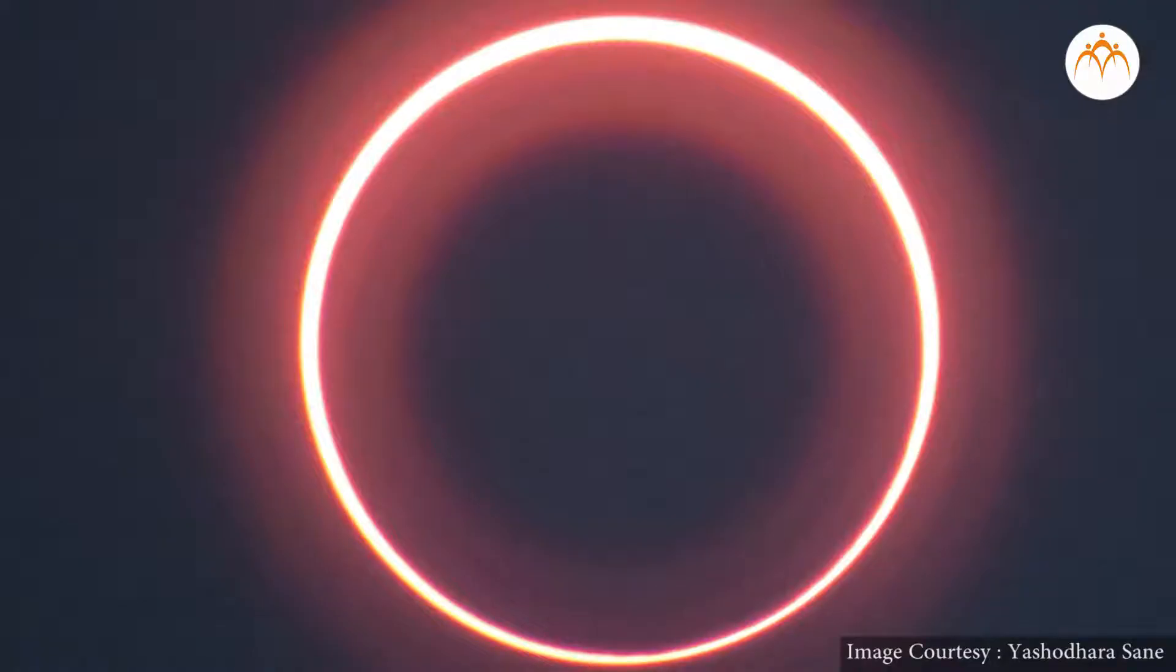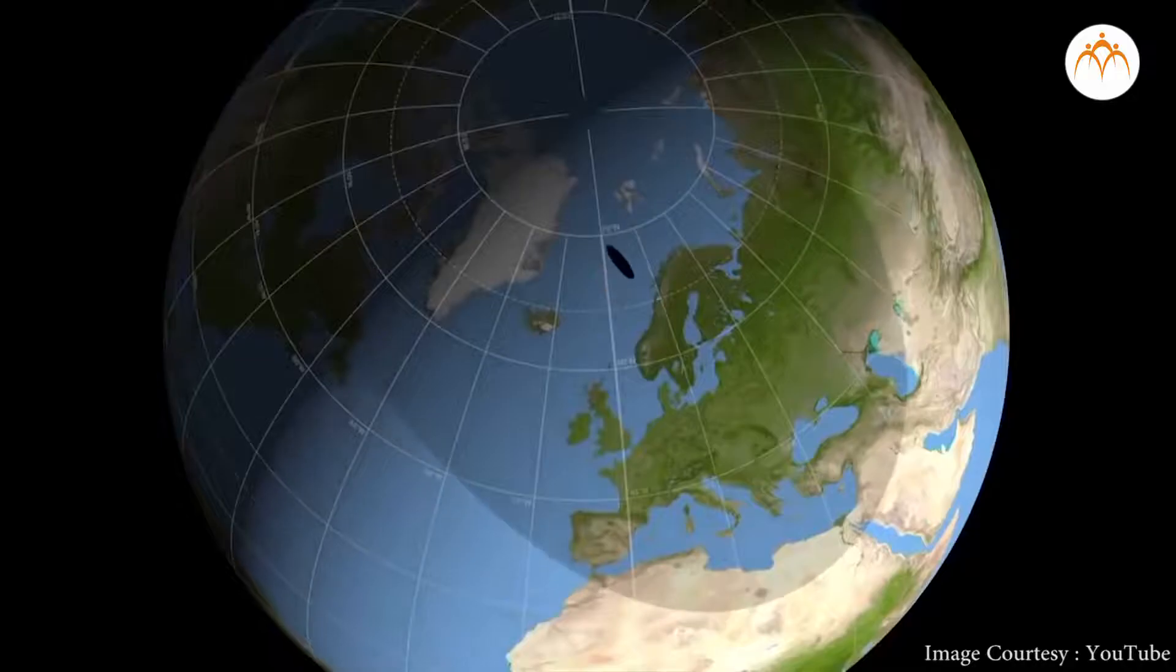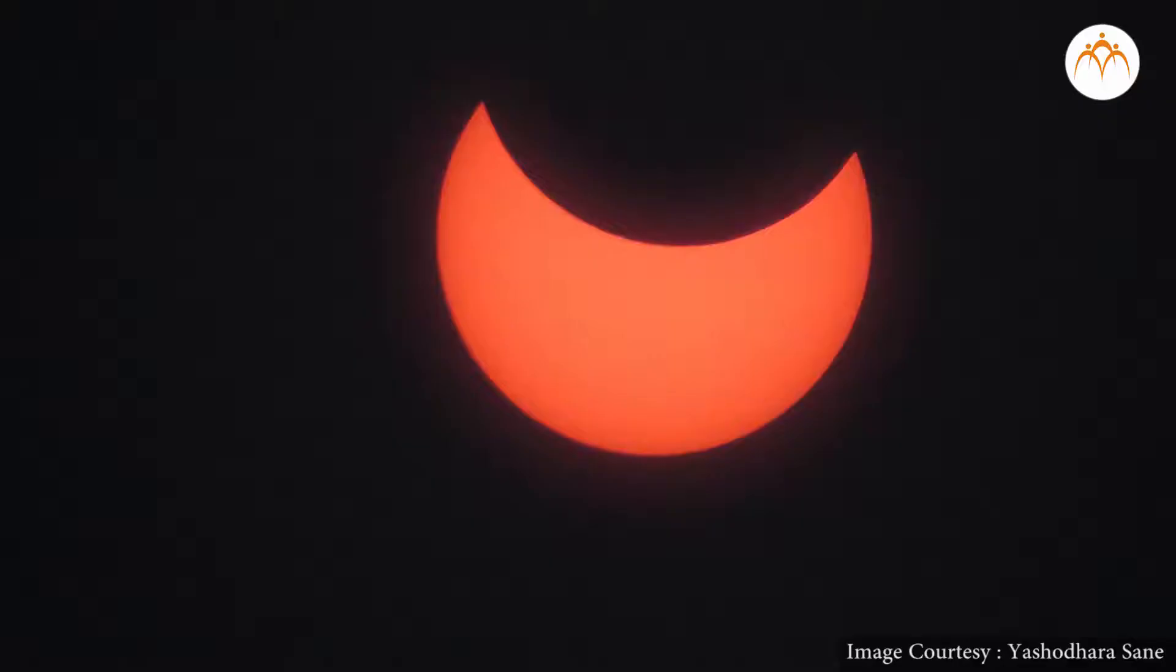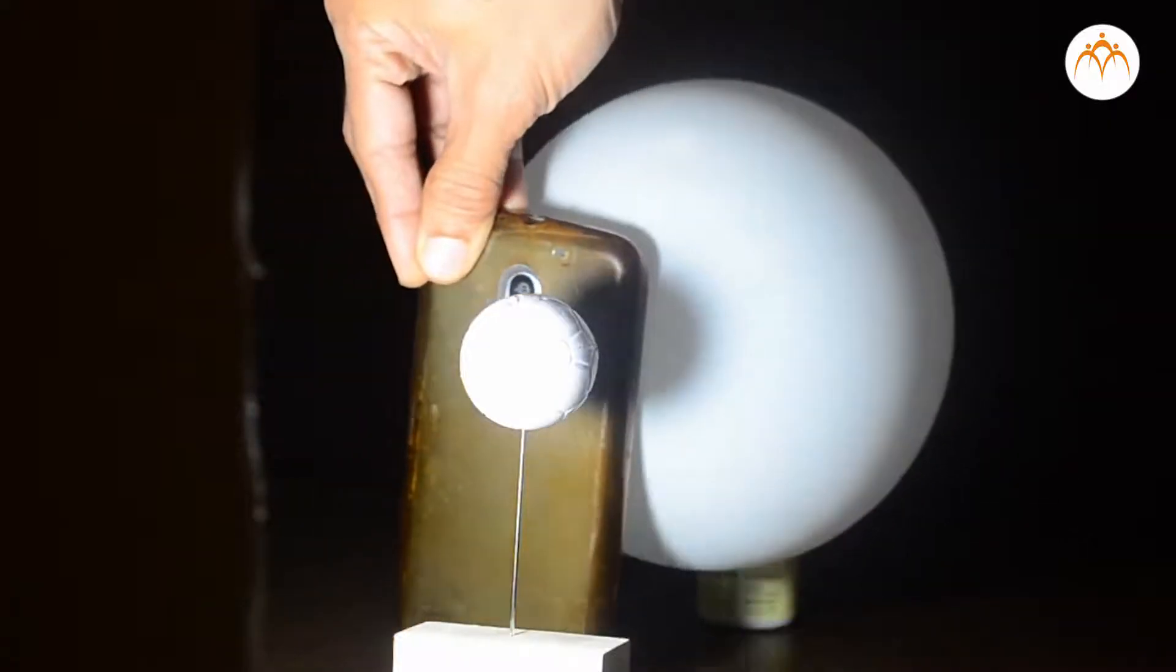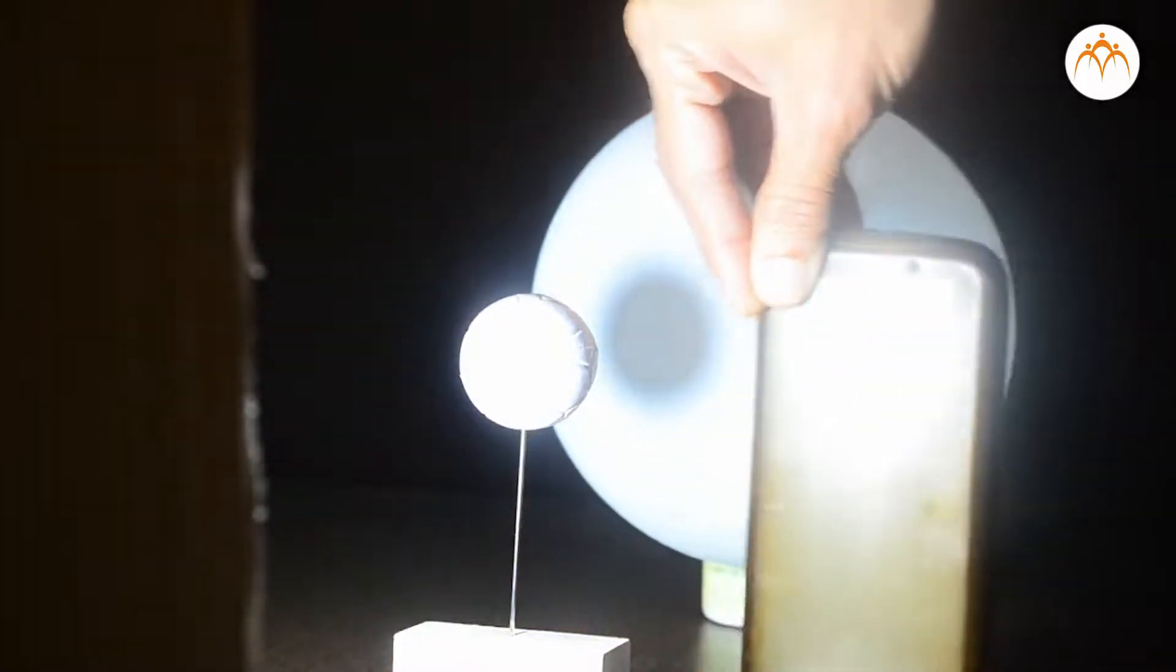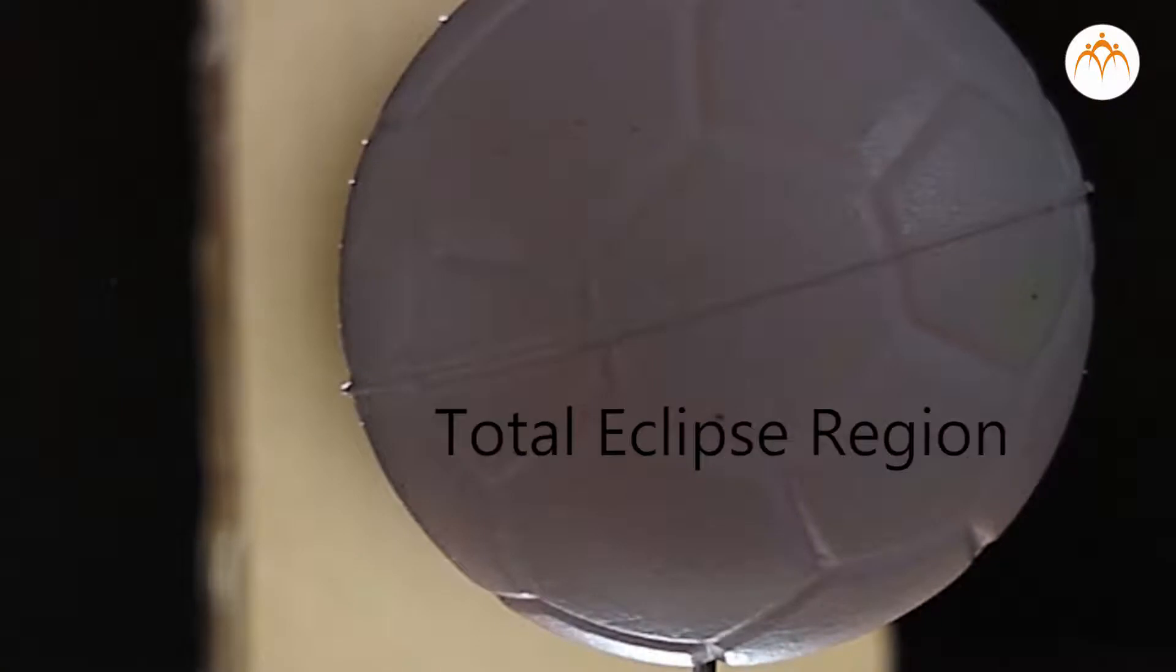There are other areas which are in the penumbra region where we see a partial eclipse. We can place a mobile phone camera at the shadow region on the Earth. This will help us to understand how the sun is seen from the total eclipse region and partial eclipse region.